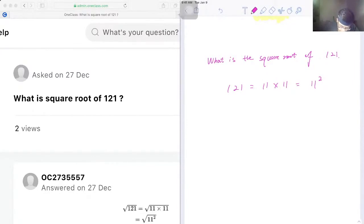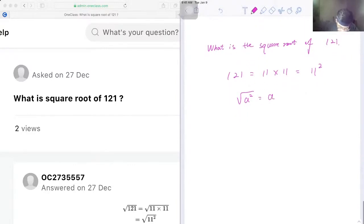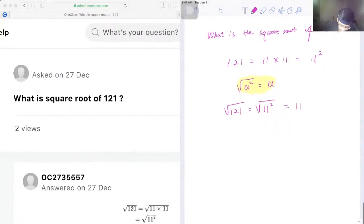Recall that the square root of anything squared will just be equal to the number itself. So therefore, root 121 is equal to root 11 squared, and by using this property, we will have 11 as our answer.